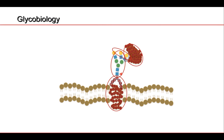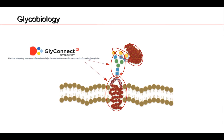In our group, we have a couple of resources, one of which is GlyConnect. GlyConnect is mainly concerned with glycoproteins — it's a curated database where we take publications that solve the structures of glycans and glycoproteins, and we also store the metadata around these, such as the taxonomy, the disease associated with the glycoprotein, and the tissue it was found in.